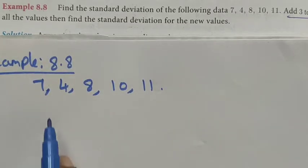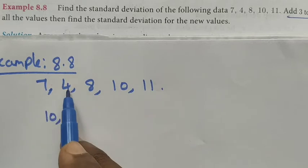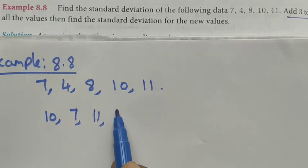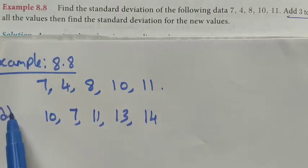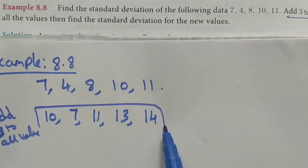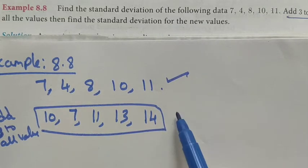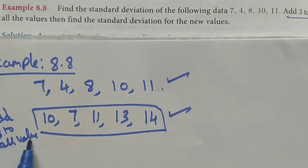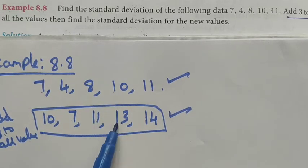The given data is 7, 4, 8, 10, 11. If you add 3 to each term we get: 7 plus 3 is 10, 4 plus 3 is 7, 8 plus 3 is 11, 10 plus 3 is 13, and 11 plus 3 is 14. So adding 3 to all values we get the new data. First we find the standard deviation for the original data, then for the data with 3 added.